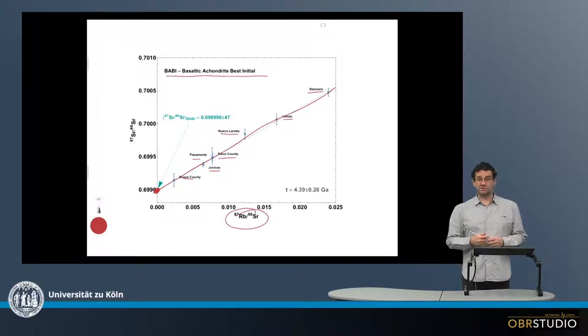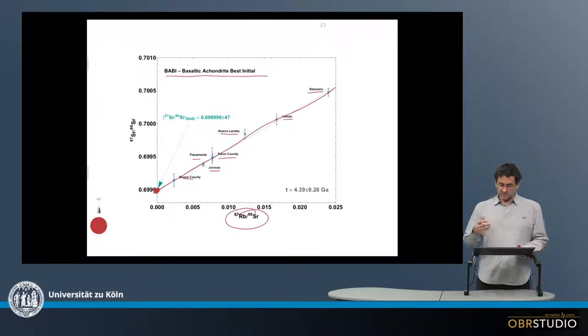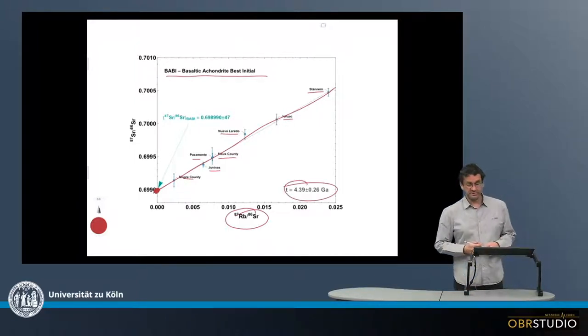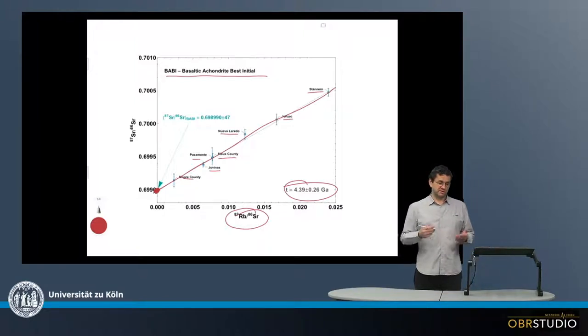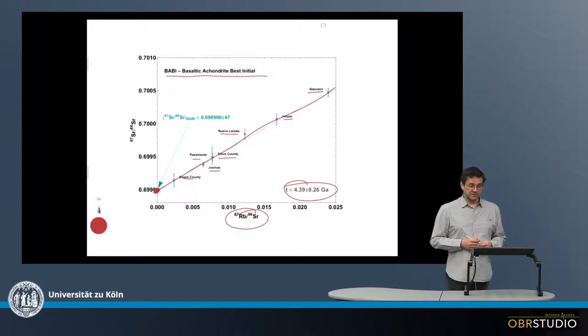But the assumption is that the achondrites and CI were the same, and this then also represents the initial value of our solar system. And from this plot, you can also determine the age of the achondrites, which is very similar to the solar system, about 4.4 billion years.